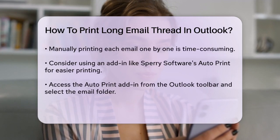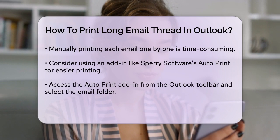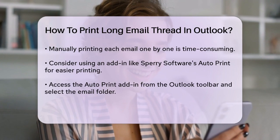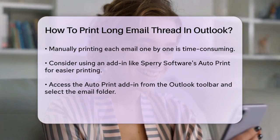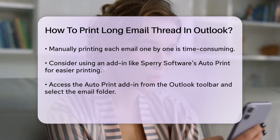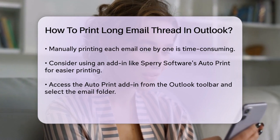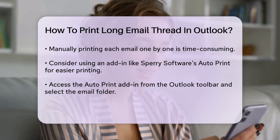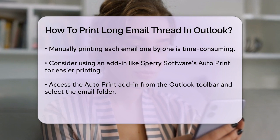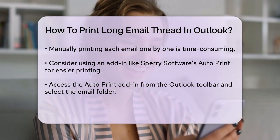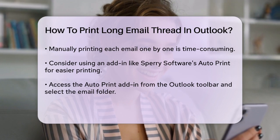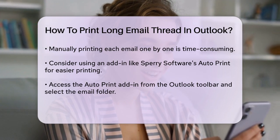Alternatively, you can use an add-in like Sperry Software's Auto Print. This add-in allows you to print entire folders or specific emails and attachments in a more controlled manner. For example, with the Auto Print add-in, click on the Sperry Software icon in the main Outlook toolbar. Go to the Print Now tab. Choose the folder containing the email thread you want to print. Select the appropriate filters or choose to print all emails and attachments. Click the Print Now button. This add-in can handle printing the emails and attachments in order, which is particularly useful if you need to print long email threads.